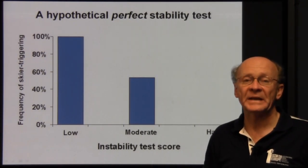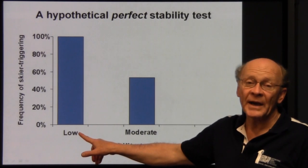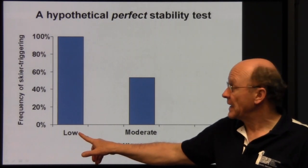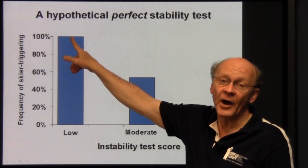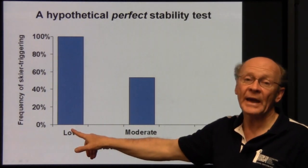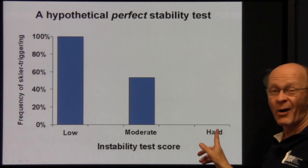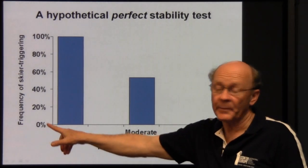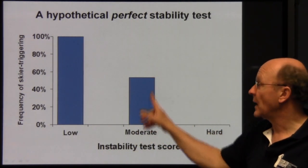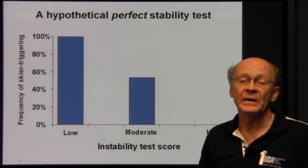Let's suppose we had a perfect instability test. When we did the test and applied a low force to get a fracture, if every time we got that result we skier-triggered the adjacent slope — in other words, 100% skier triggering whenever we applied a low force — and 0% skier triggering whenever we applied a hard force, and perhaps some intermediate value for moderate force, that would be an ideal or perfect instability test.